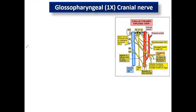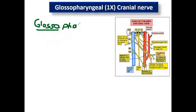Glossopharyngeal — what is the story of the glossopharyngeal? From its name: glosso means tongue, and pharyngeal means pharynx. I will identify the branches of this nerve from its name.